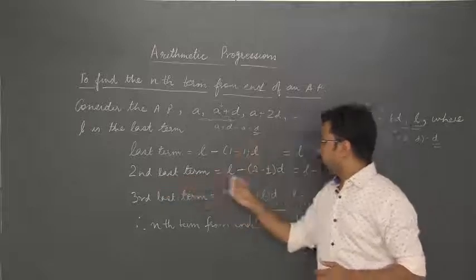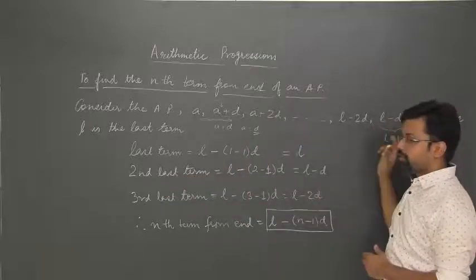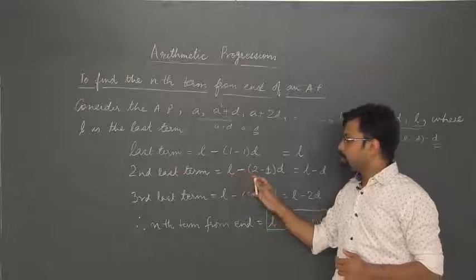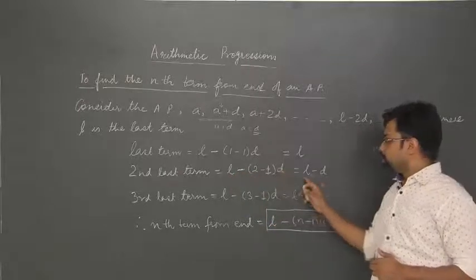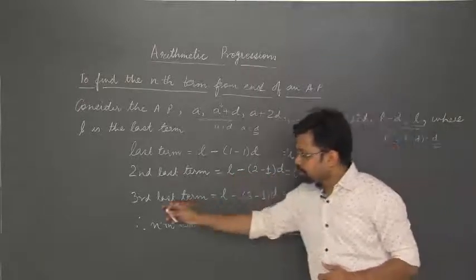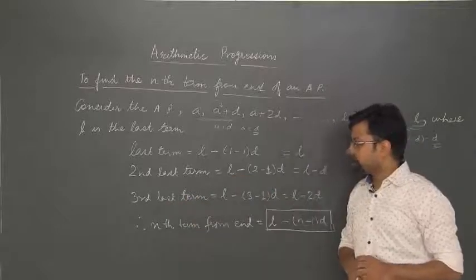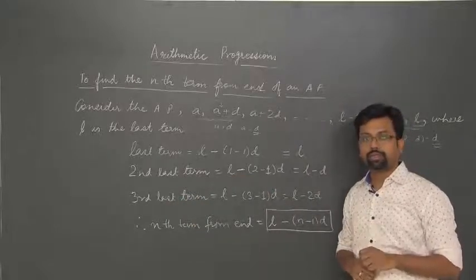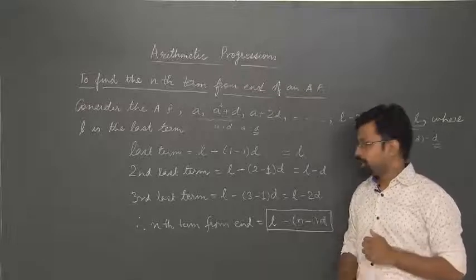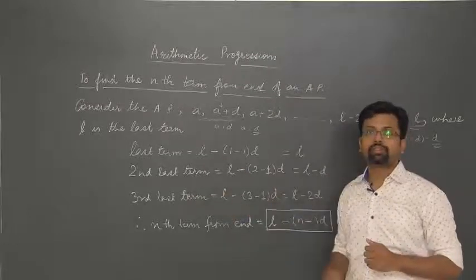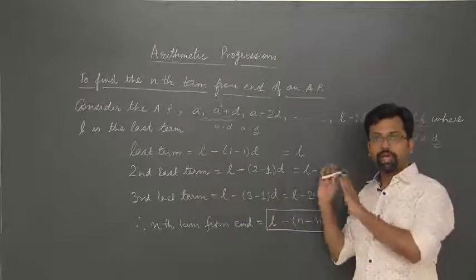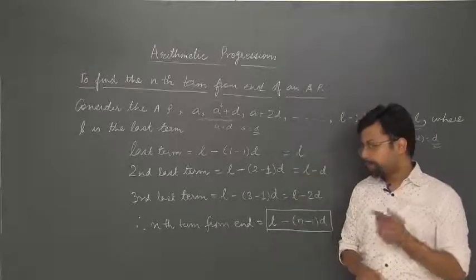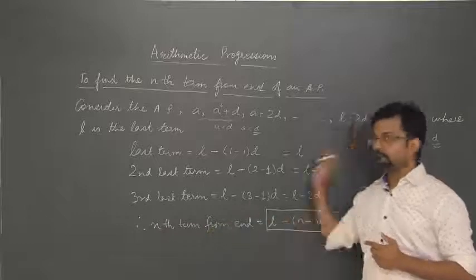The second last term is L minus D, and that can be written as L minus (2 minus 1) into D, so we have L minus D. Similarly, the third last term can be written as L minus (3 minus 1) into D, that is L minus 2D. If we go on writing the terms from the back, from the last term onwards, we will get the nth term from the end.